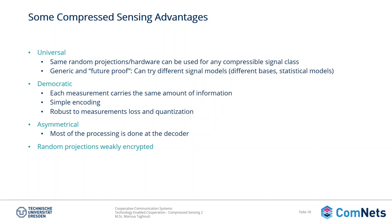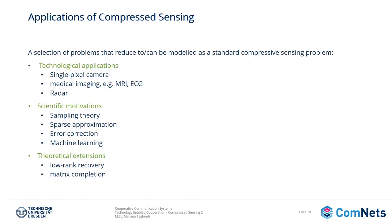For the applications, we have technological applications including the single pixel camera, medical imaging such as ECG and MRI, and radar. It is also used for scientific motivations and research areas like sampling theory, sparse approximation, error correction, and machine learning. I would also like to mention the theoretical extensions of low rank recovery or matrix completion — for example, for matrix completion, take the example of Netflix where subscribers rank movies but some don't. The field of matrix completion provides a guessing or tries to fill in these empty spots from subscribers who haven't set their ranking yet.